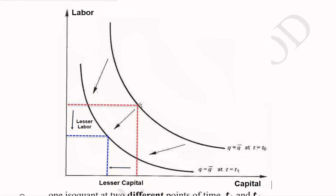Because previously in order to produce q bar, we needed this much of capital and this much of labor. But after the technological progress over time, that is from t₀ to t₁, this shift has taken place.